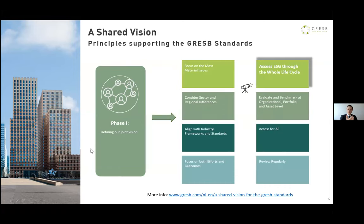Earlier in January this year, we published a vision of the GRASB standard, which was the main deliverable of phase one — the link is at the bottom of this slide. This vision is supported by eight main principles, along with details about what each principle means. One of those principles is that the GRASB standards should assess ESG through the whole life cycle, which already gives you an indication of what you can expect from the GRASB standards in the future in terms of topics covered.